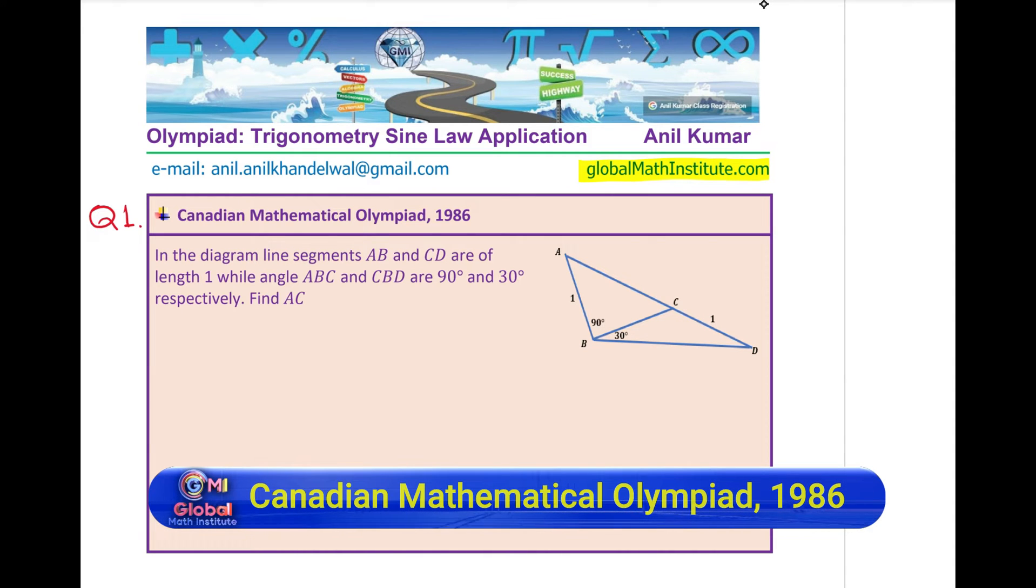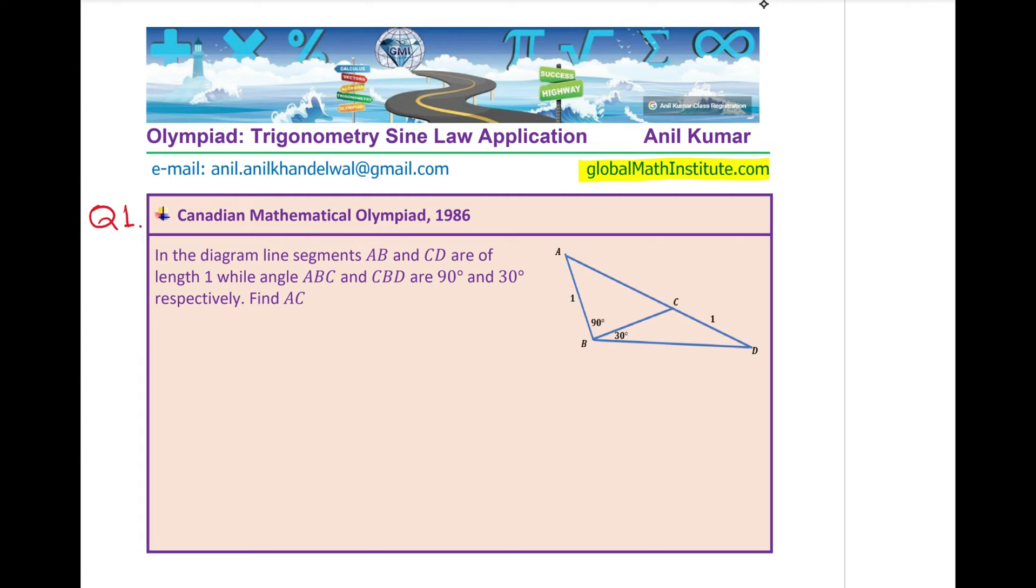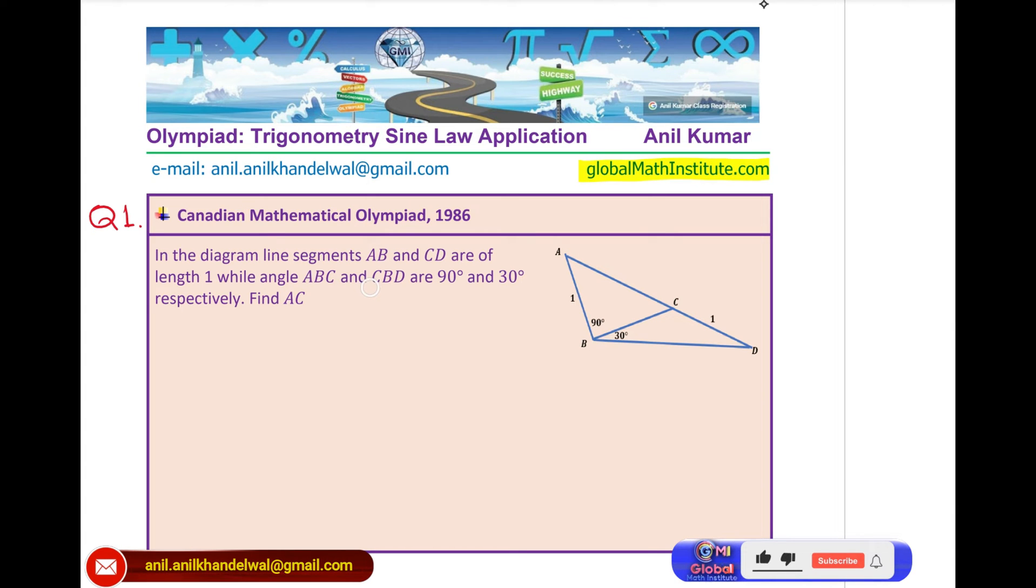I would like you to pause the video, read the question, attempt and then look into my suggestions. The question here is: in the diagram line segments AB and CD are of length one, while angle ABC and CBD are 90 degrees and 30 degrees respectively. Find AC.